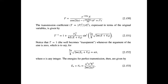If the transmission coefficient equals one, that means all the incoming particles are being transmitted. That happens when a specific condition is satisfied, and the resulting admissible energies are the solutions of the infinite square well, which are given here.